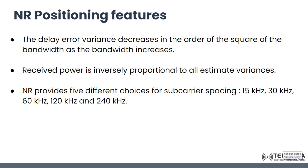The delay error variance decreases in order of the square of bandwidth, so as bandwidth increases the delay variance decreases. Received power is inversely proportional to estimate variances. New radio provides five different choices for subcarrier spacing: 15 kHz, 30 kHz, 60 kHz, 120 kHz, and 240 kHz.